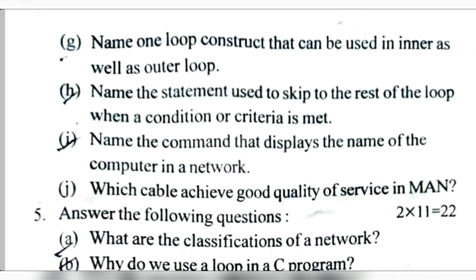The statement used to skip the rest of the loop when a condition is met is continue. If we want to completely exit a loop, we use break. If we want to skip a particular part of the loop, we use continue. The command that displays the name of the computer in a network is hostname. For cable quality, coaxial provides good quality at a cheaper cost; fiber optics is high speed but expensive and easily damaged. So the answer will likely be coaxial — I will confirm the answer in the comment section after checking the book.